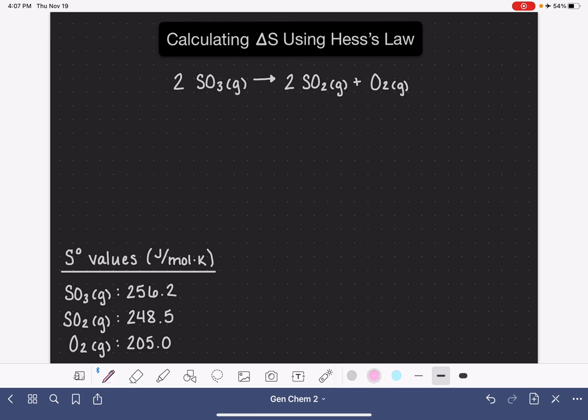These are all standard entropy values, so that little standard symbol that looks like a degrees symbol just means that all of these entropy values have been collected under standard conditions, which is one atmosphere and 25 degrees Celsius.